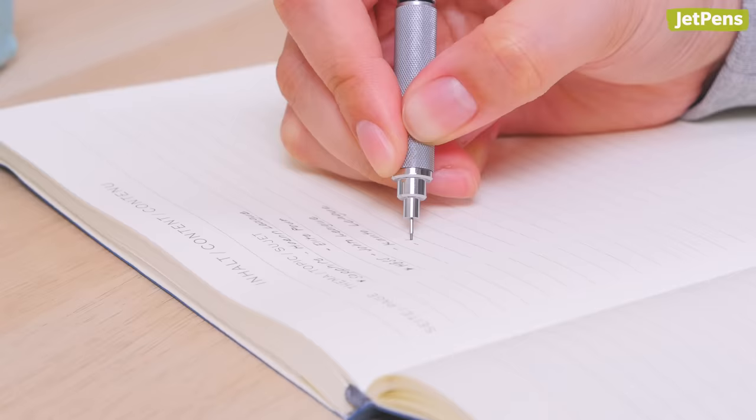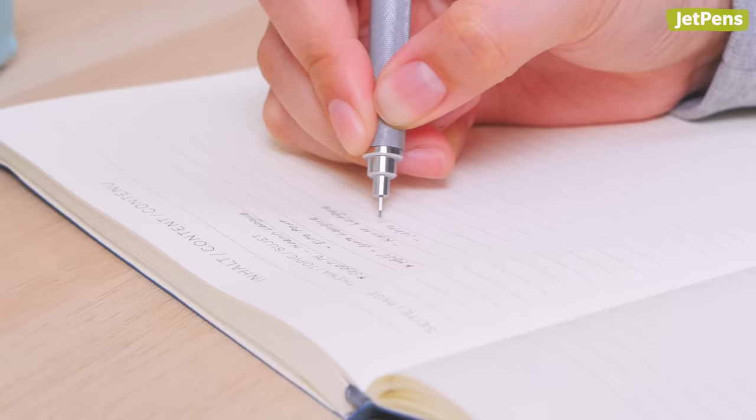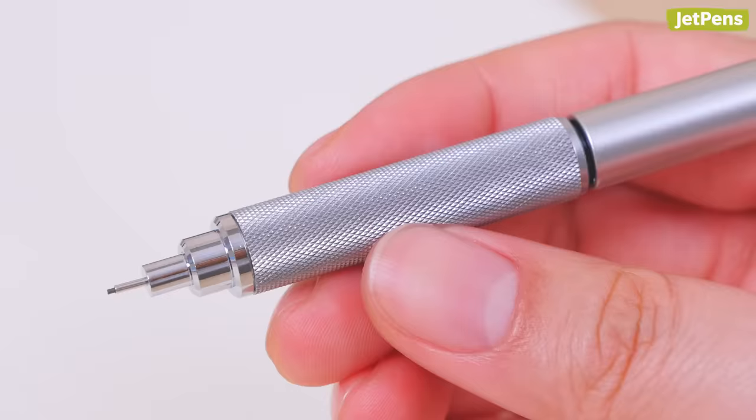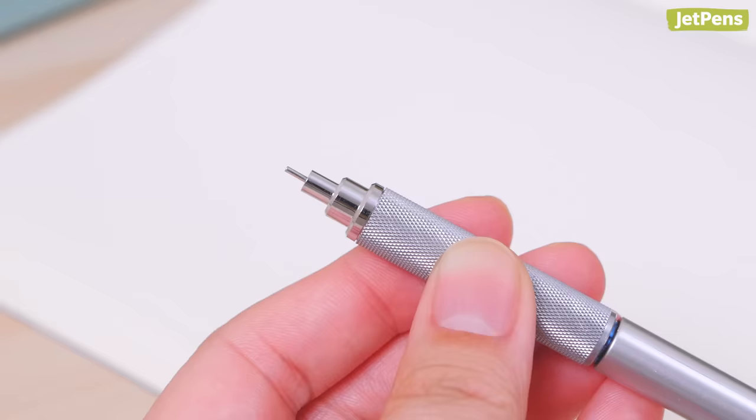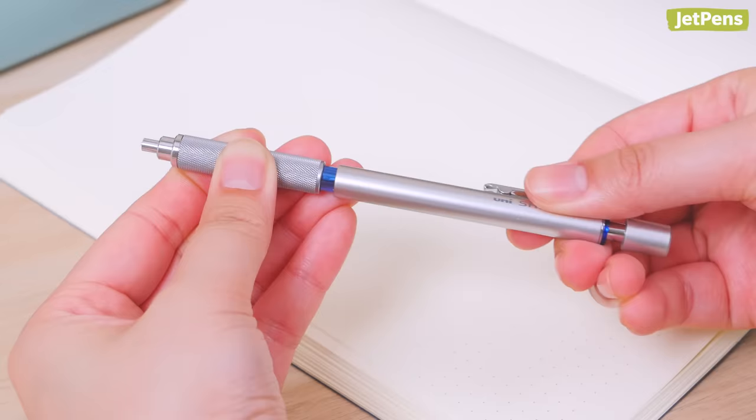The pencil is weighted with a low center of gravity, so writing sessions won't result in hand fatigue. Plus, the metal grip section offers a knurled design to ensure it won't slip. When you're done writing, unlock the shift pipe to let the lead sleeve recede back in. Then, twist it one more time to lock it, keeping the lead sleeve safe inside the barrel.